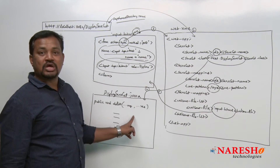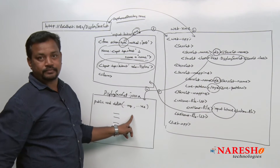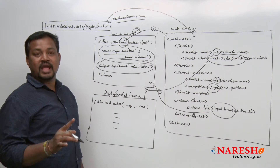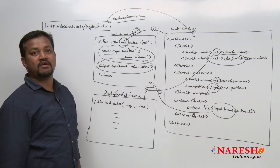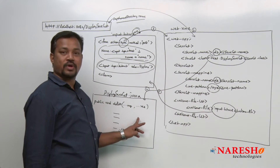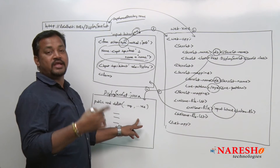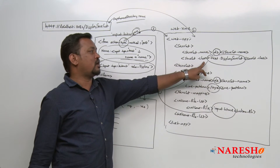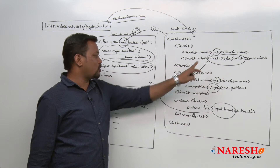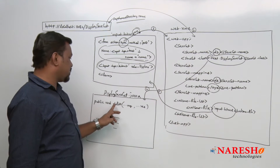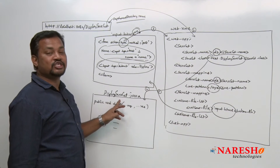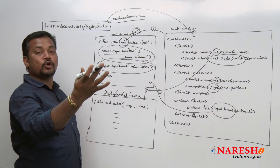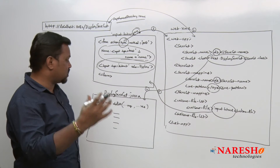This servlet program will be loaded, and I am calling this as loading and instantiation — part of your life cycle of the servlet program. Whenever the test.DisplayServlet is identified, automatically your DisplayServlet.class file is loaded for execution, and while loading it is automatically instantiated. This is the theory here.